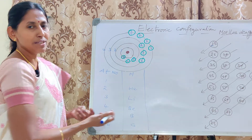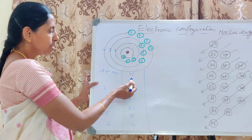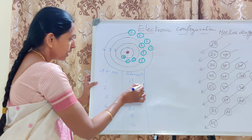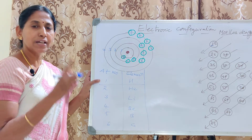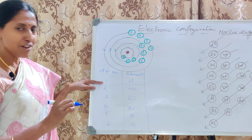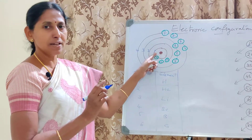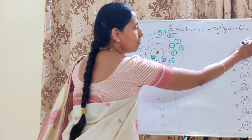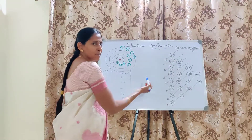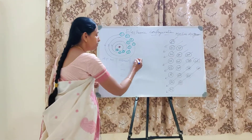For the first 6 elements, let us learn how to write the electronic configuration — likewise the remaining will follow. The atomic number of hydrogen is 1, meaning only 1 electron. In hydrogen, only one shell exists, and in that only one subshell: 1S. So the first arrow mark is on 1S, and in that 1S there is one electron.